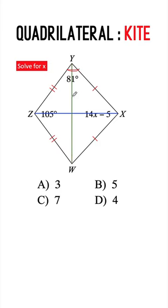In a kite, the angles opposite the cross diagonal are congruent. So if this angle here is 81 degrees, then angle ZWX must also be 81 degrees.